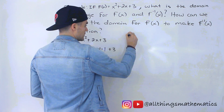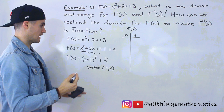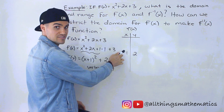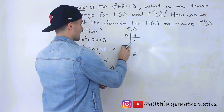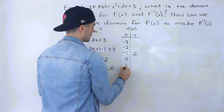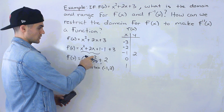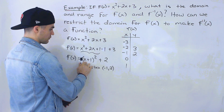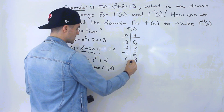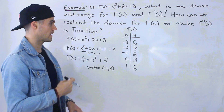Now we can make a table of values. To keep it symmetrical, I'll put the vertex (−1, 2) in the middle, with x-values to the left: −2 and −3, and to the right: 0 and 1. Plugging in: f(−2) = (−2+1)² + 2 = 3; f(−3) = (−3+1)² + 2 = 6; f(0) = 3; f(1) = 6. Notice the symmetry.